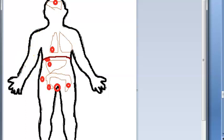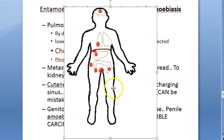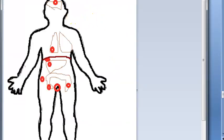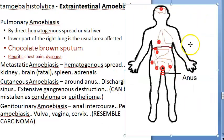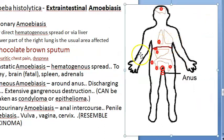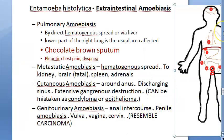Genitourinary amoebiasis occurs through anal intercourse causing penile amoebiasis, and the female genital parts can also be affected. In all these extra intestinal forms, the lesions can be mistaken for carcinoma — so remember that with Entamoeba histolytica in many locations, things can be confused with carcinoma. That concludes extra intestinal amoebiasis.